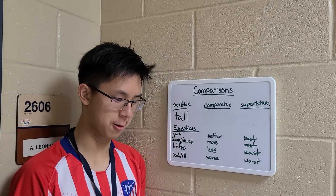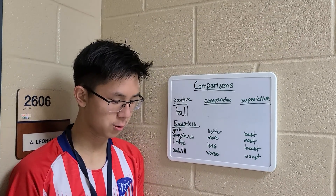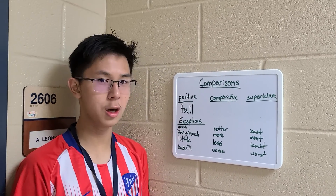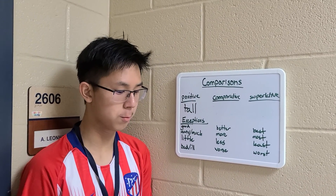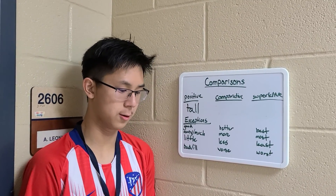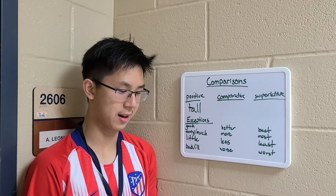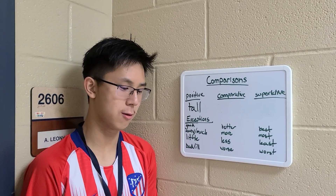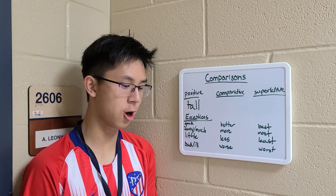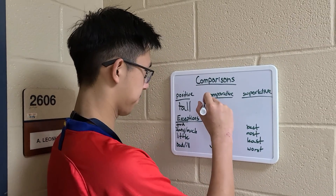Comparative comparisons describe two things using -er or more with the words. An example is: Reva was taller than Bob.